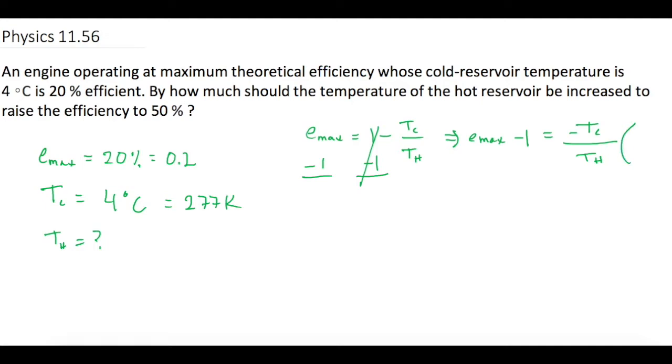Now we'll multiply both sides of the equation by Th. So now we have Th times Emax minus 1 is equal to a negative Tc. And then divide by Emax minus 1. And that gives us Th is equal to a negative Tc over Emax minus 1.